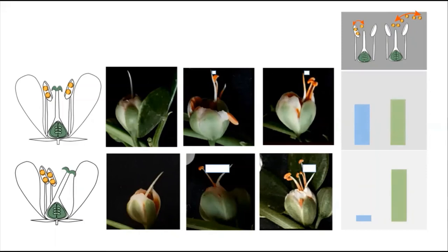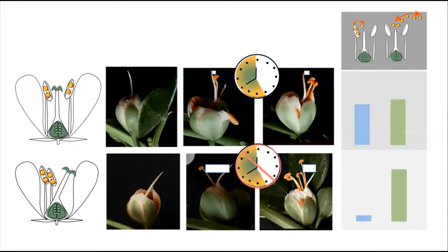The proximity of sexual organs and partial dichogamy in the C-morph allows for the delayed selfing and assurance of reproductive success, while the separation of sexual organs through herkogamy in the L-morph prevents late selfing and encourages a higher rate of outcrossing, promoting genetic diversity.